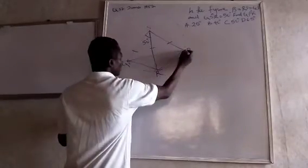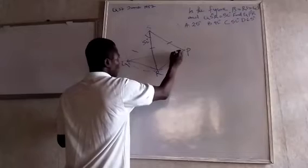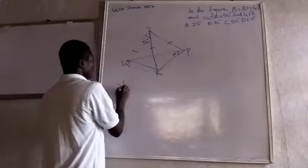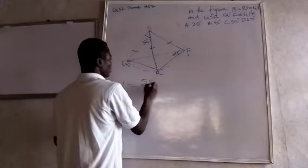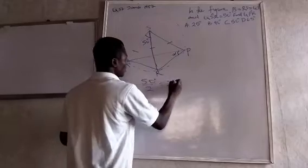This is 50 degrees. And this one will be half of this. This is the angle you are looking for. Alpha is equal to 50 over 2, which is 25 degrees.